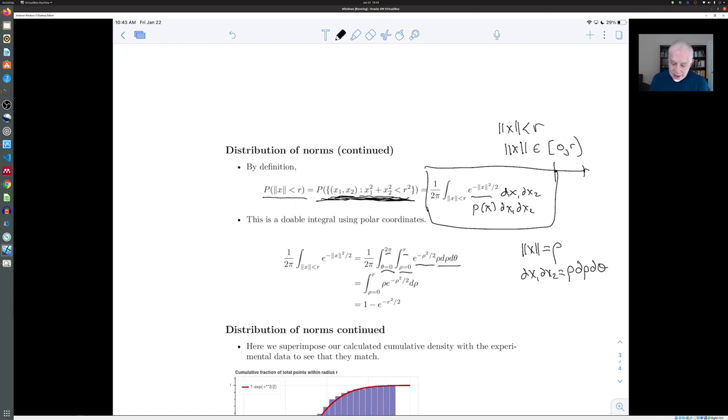We can do the theta integral first. It's just the integral from zero to two pi. None of this stuff here involves theta. So we just get the integral of theta from zero to two pi, which gives me two pi, which cancels this two pi. And we're left with this integral, the integral of rho E to the minus rho squared over two D rho. And because you have the rho down here and the rho squared in the exponent, you can use a substitution and you get this nice formula.